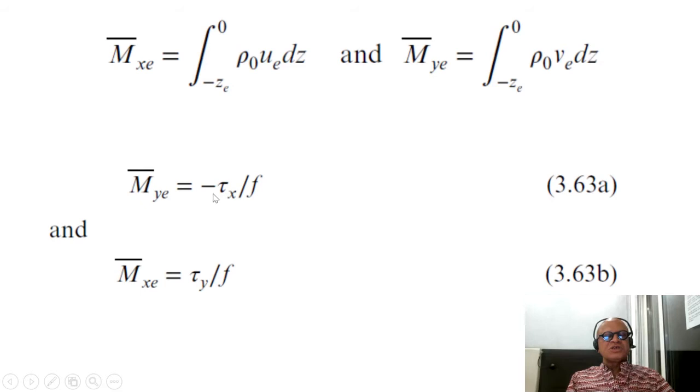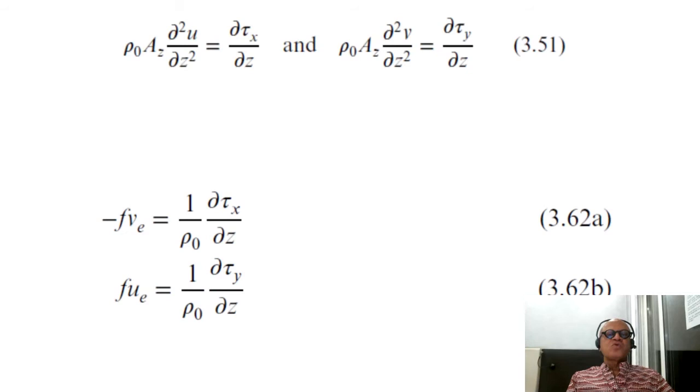So, the Ekman transports in the meridional direction is just minus τₓ over f. And in the zonal direction is just τᵧ over f. Lovely solution, right? No wonder he did it so quickly. Now we look at it and say, wow, that's so simple. But imagine when he discovered it, he must be so thrilled.